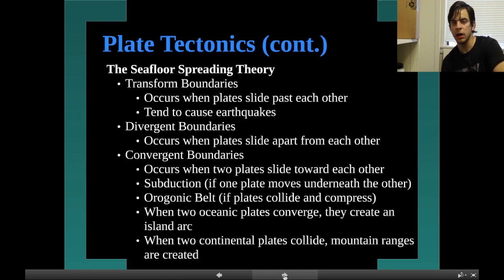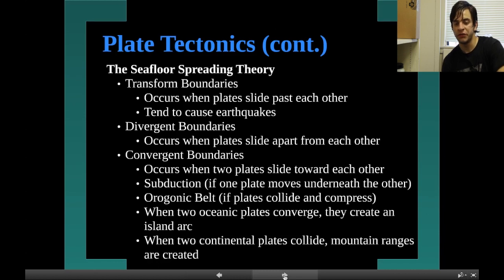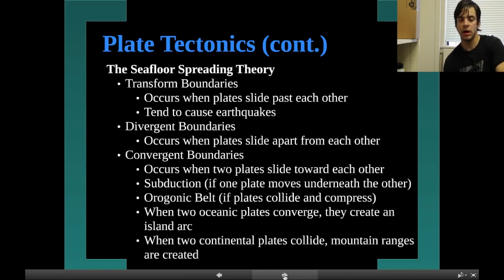The second theory is the seafloor spreading theory. Transform boundaries occur when plates slide past each other, and they tend to cause earthquakes. Diverging boundaries occur when plates slide apart from each other. Converging boundaries occur when two plates slide toward each other. Subduction is when one plate moves underneath the other. An orogenic belt forms if plates collide and compress.